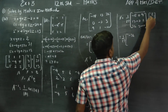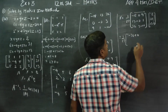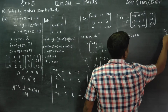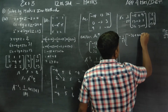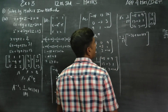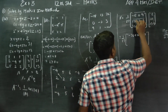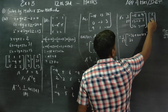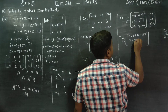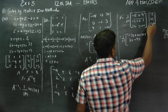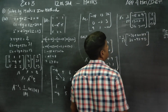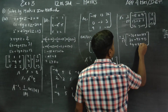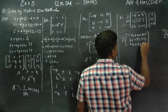Now multiplying: minus 18 into 2 gives minus 36; 0 into 31 gives 0; 9 into 13 gives 117. Then 13 into 2 is 26; minus 31 into minus 3 is minus 93; 1 into 13 is plus 13. Then 32 into 2 is 64; 3 into 30 gives plus 93; minus 10 into 13 gives minus 130.